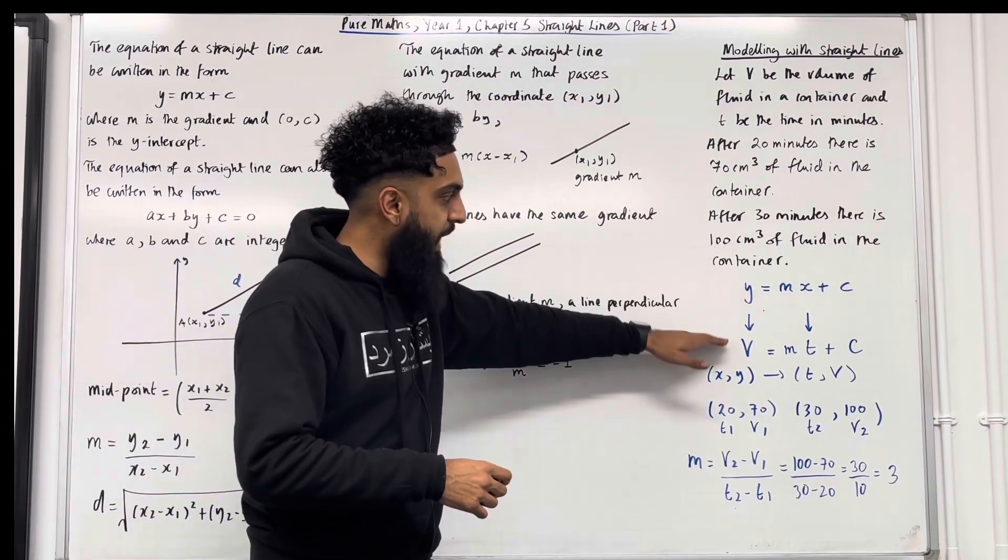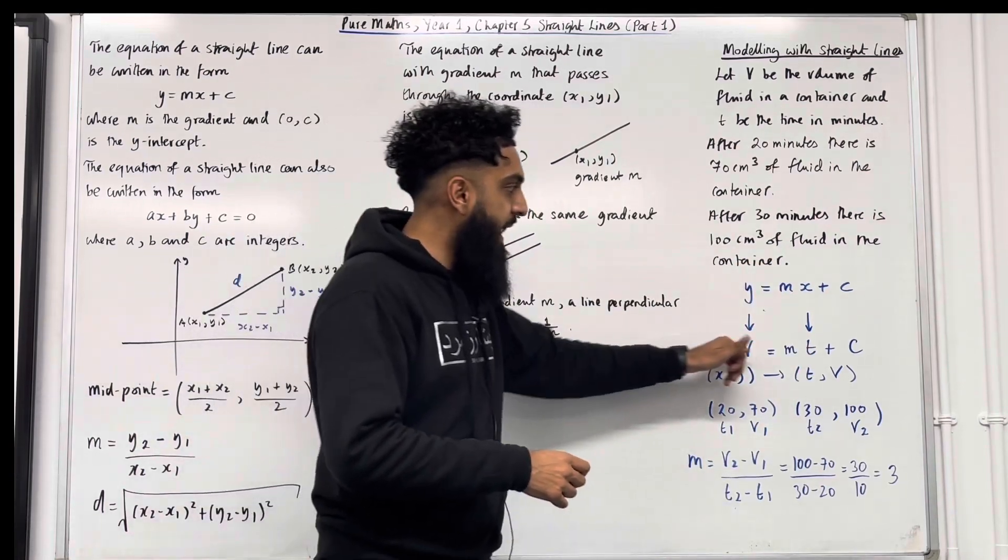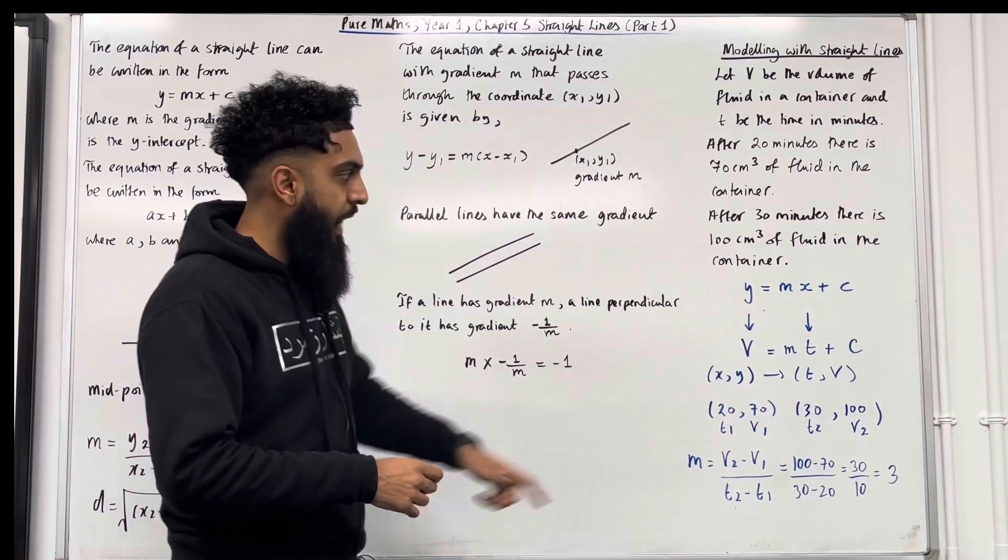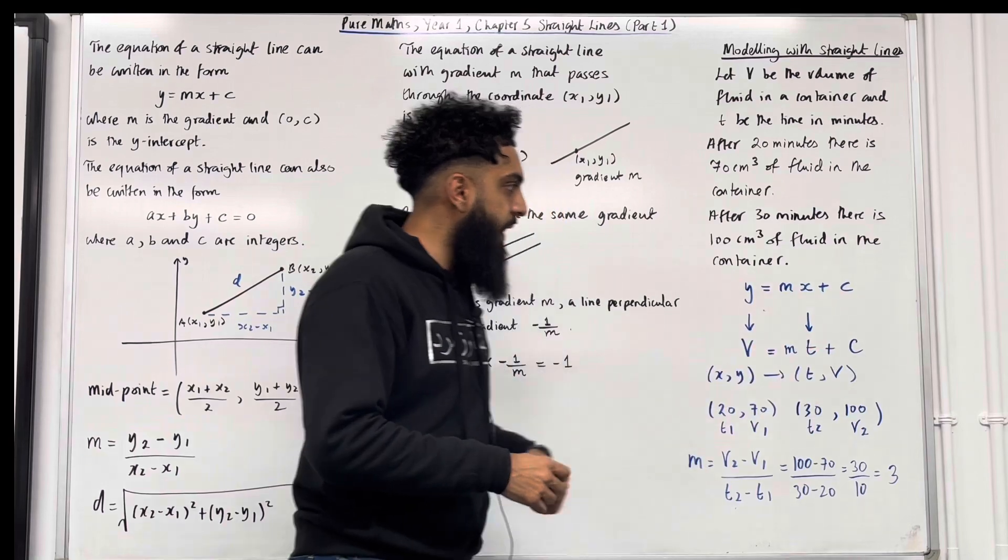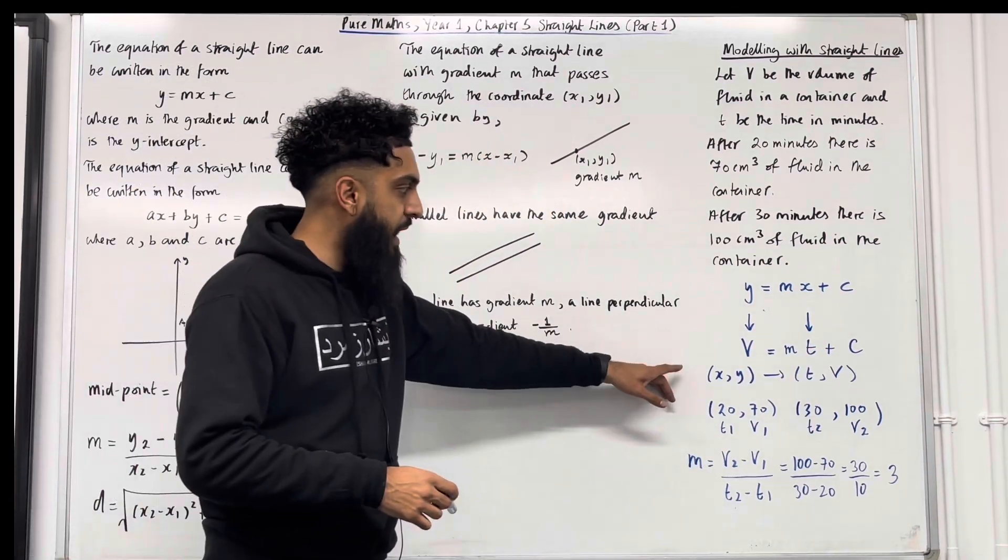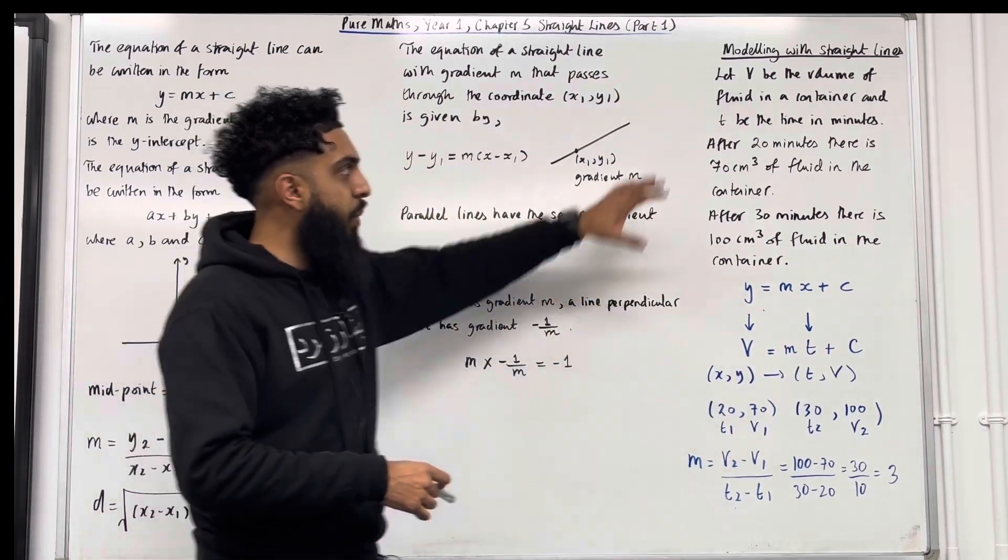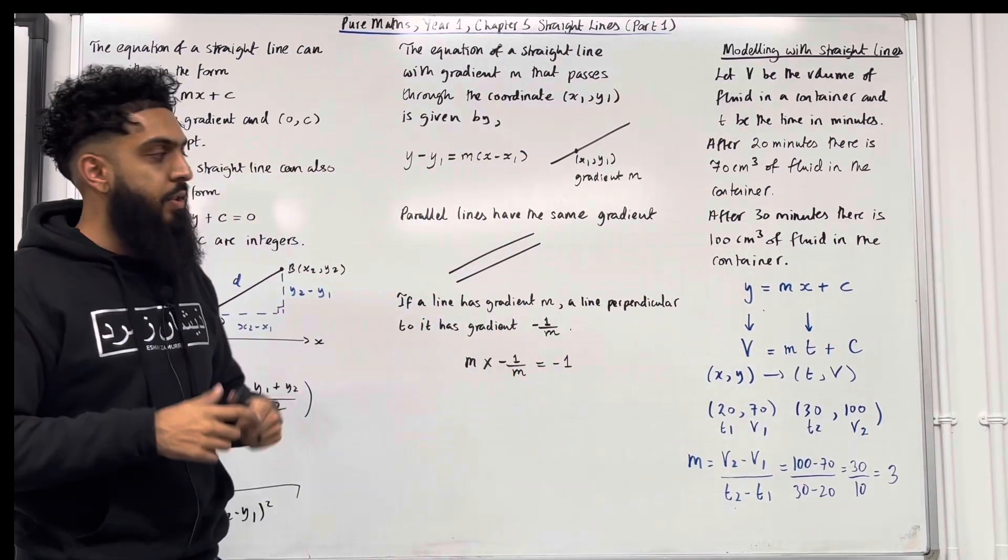Now y is replaced with v. X is replaced with t. So I've got v equals mt plus c. m is the gradient. c is the intercept with the vertical axes. Now the coordinate x, y is replaced with t and v.